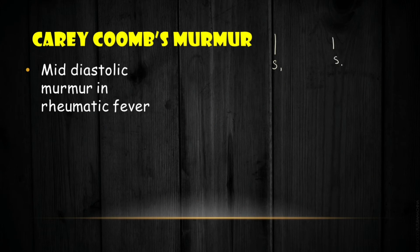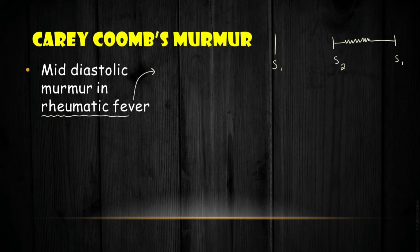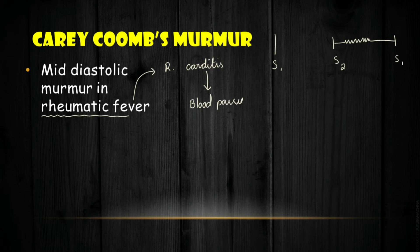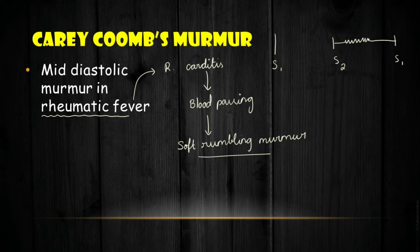Carey Coombs murmur is a mid-diastolic murmur seen in rheumatic fever. In rheumatic fever, the cardiac muscle undergoes rheumatic pancarditis — inflammation of the pericardium, myocardium, and endocardium. Because of this transient inflammation, blood passing through produces a soft rumbling murmur. Importantly, the Carey Coombs murmur is heard only during the acute rheumatic fever phase, as it is associated with transient inflammation.